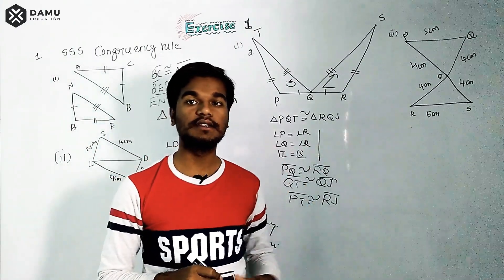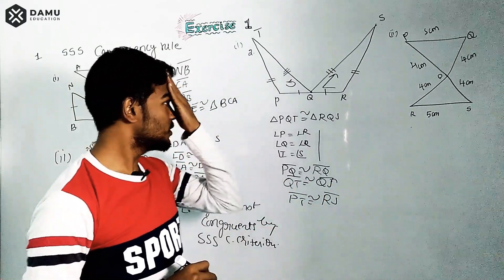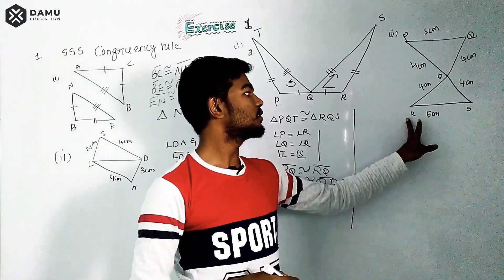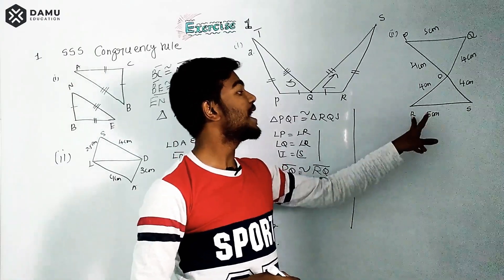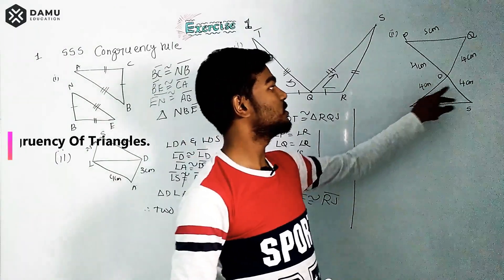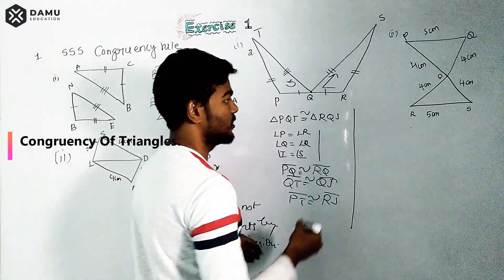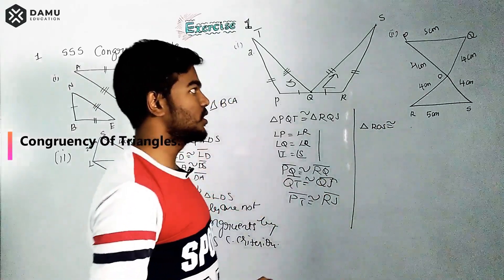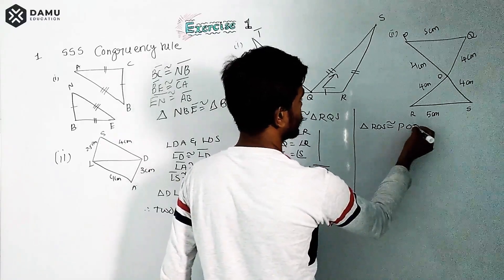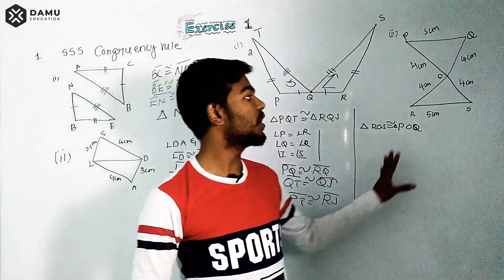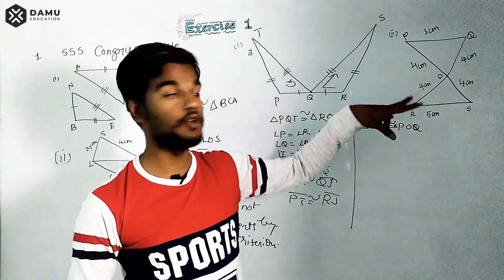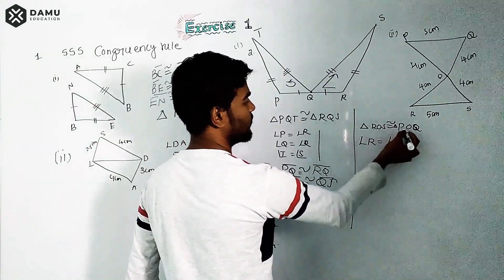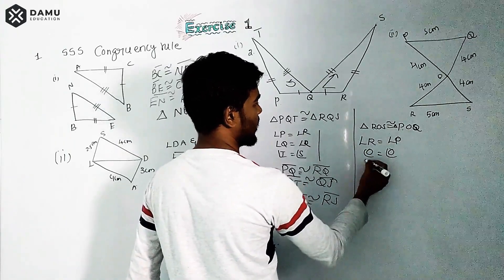For the second part, we write the congruency for the next pair of triangles. Starting from the base, triangle ROS is congruent to triangle POQ. This is because RS and PQ both measure 4 centimeters, and the remaining sides RO, OS and PO, OQ are also equal. Therefore, angle R equals angle P, angle O equals angle O, and angle S equals angle Q.